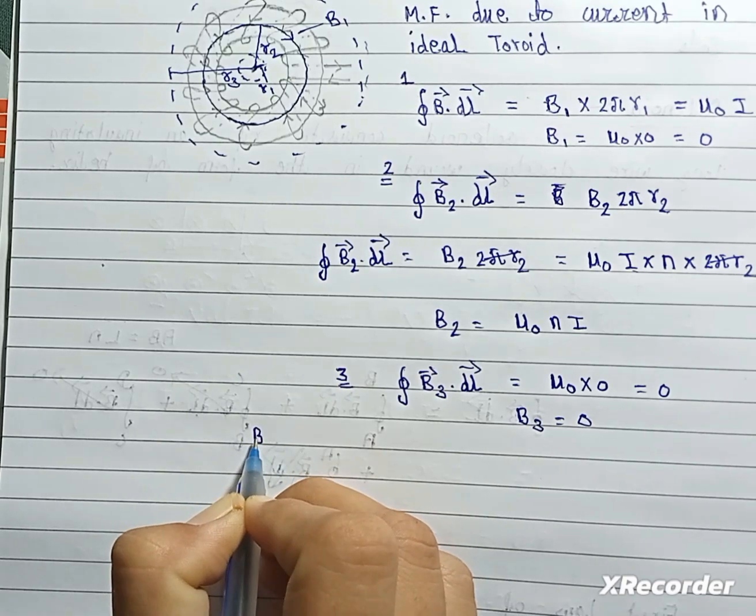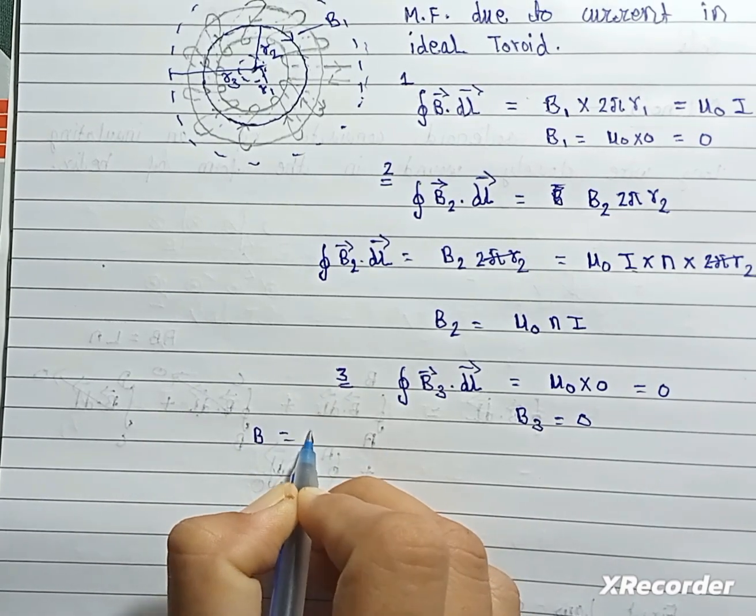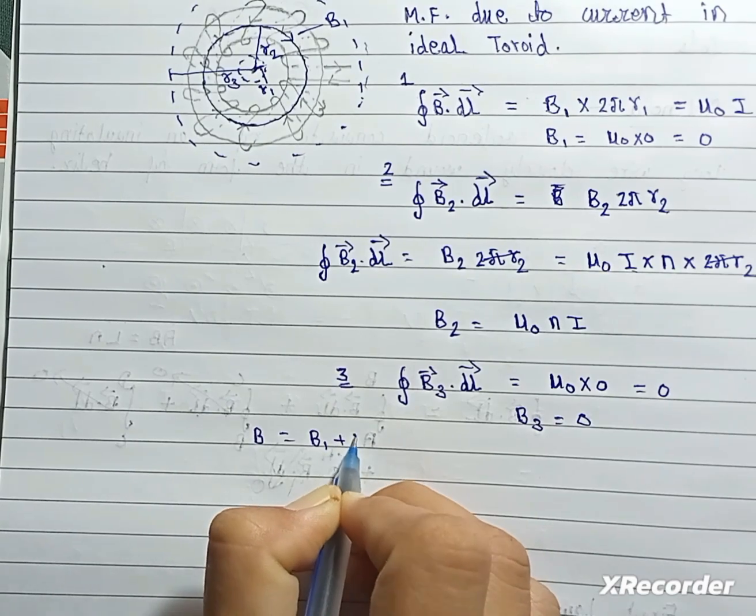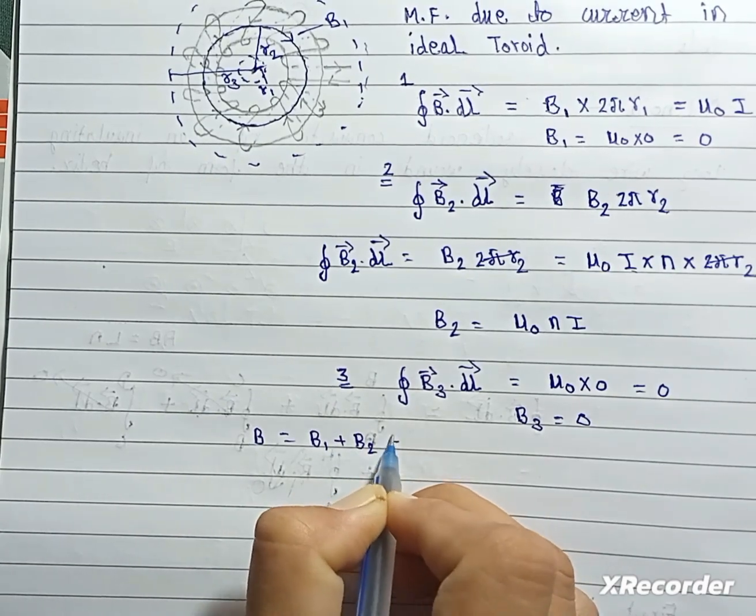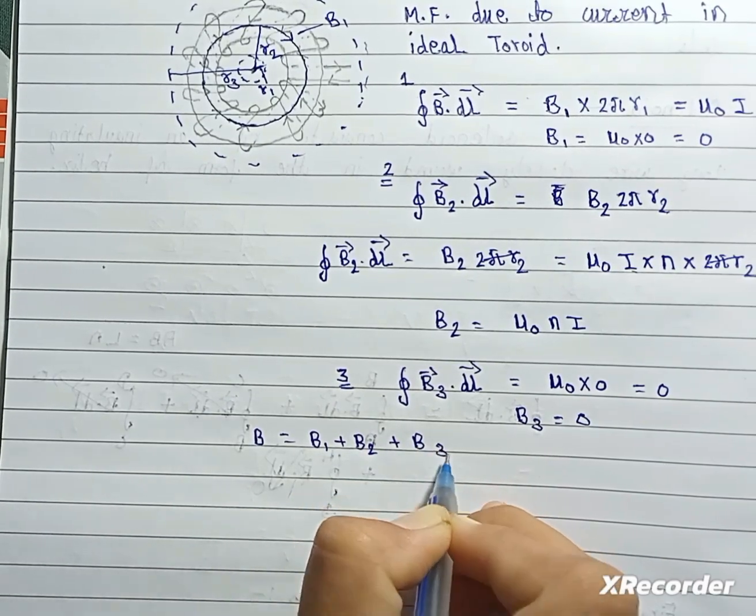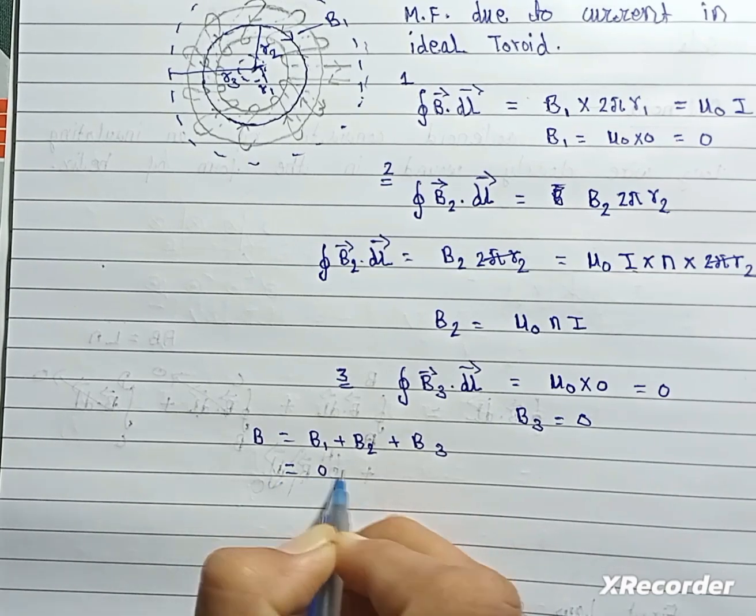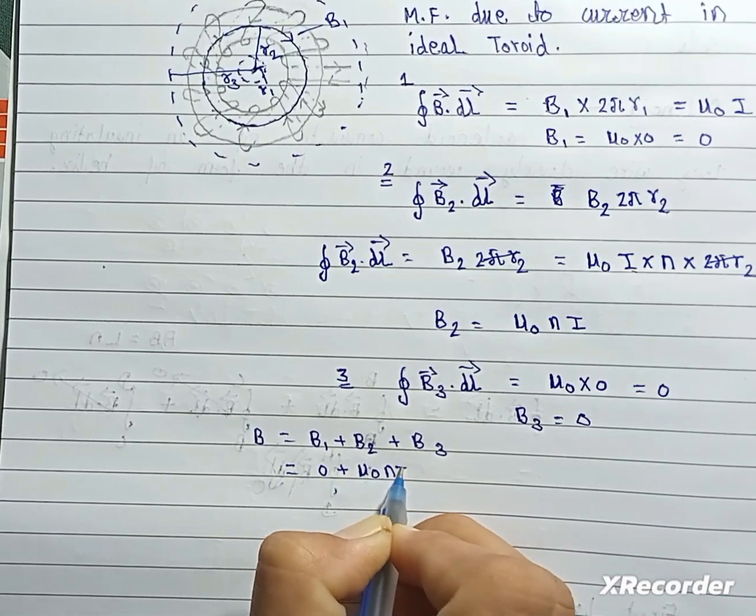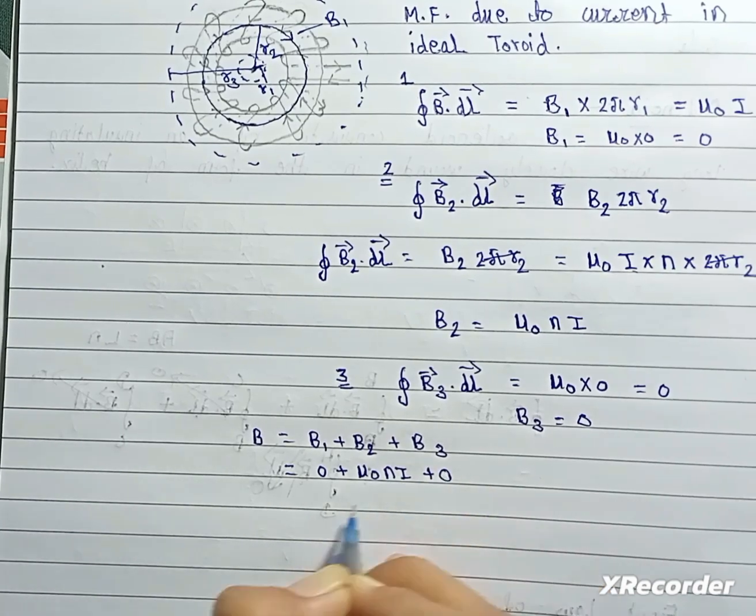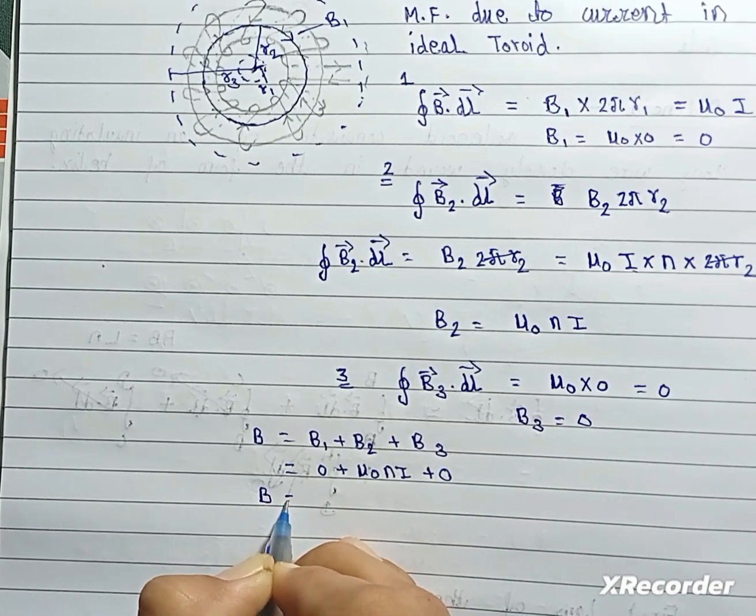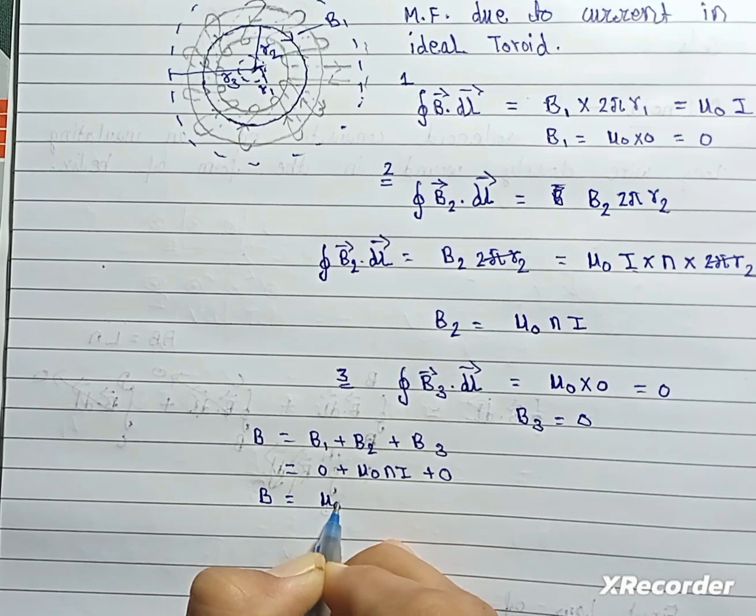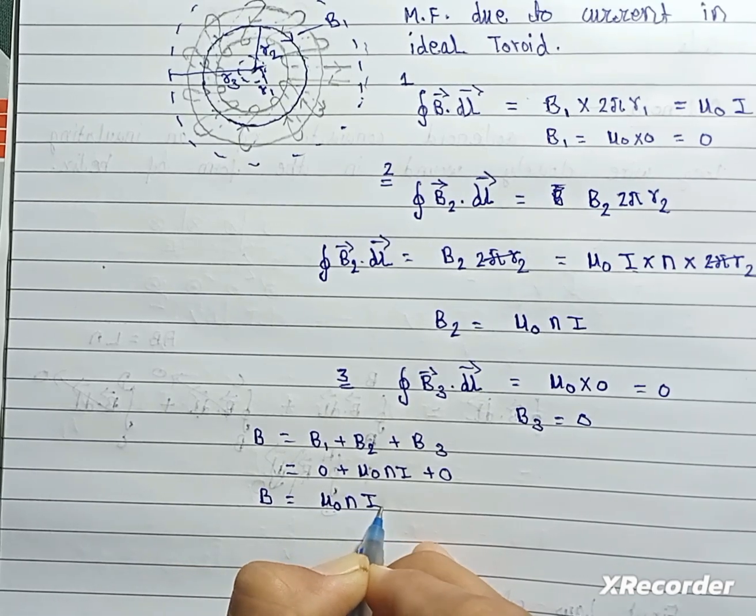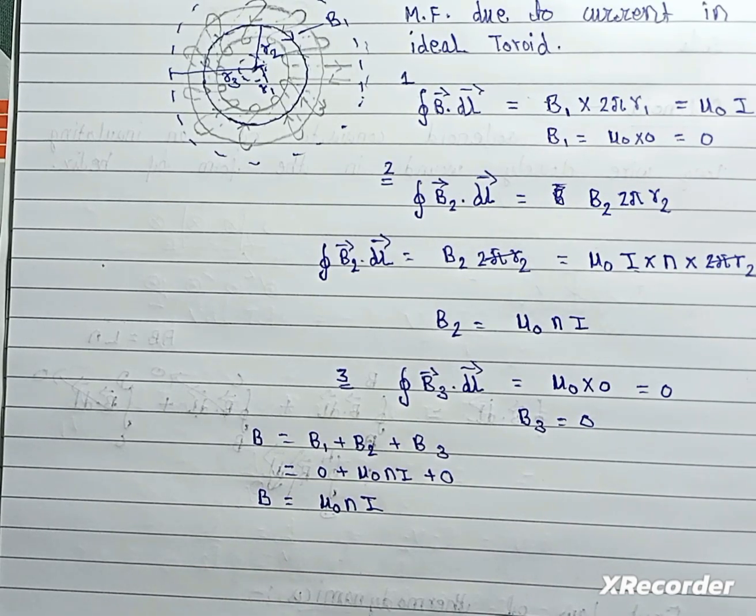So B equal to B1 plus B2 plus B3. This is equal to 0 plus μ₀nI plus 0. From here, B equal to μ₀nI. This is the magnetic field due to current in an ideal toroid.